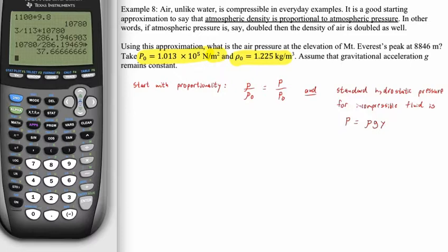So standard hydrostatic pressure for an incompressible fluid is p equals rho g y, where y is depth. But here we're not going to consider a linear relationship, but instead a relationship that is definitely not linear. So we're going to look at the differential of pressure. We are interested in dP, which would be rho g dy.